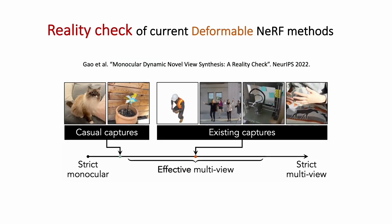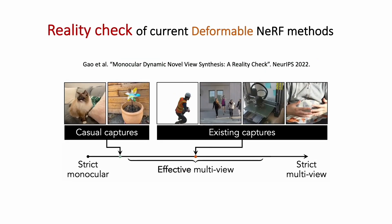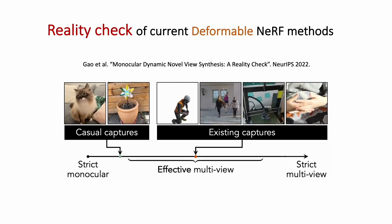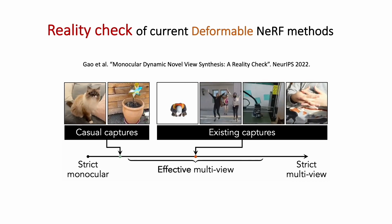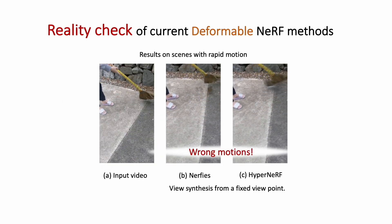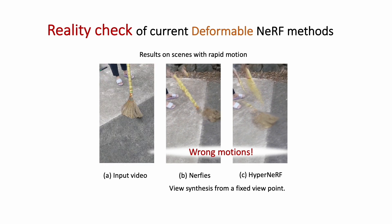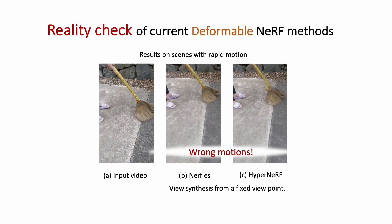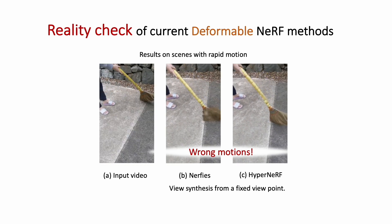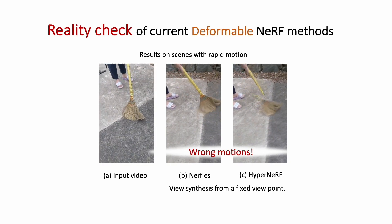Recent deformable NeRF approaches have achieved promising results, but based on observations, their current success is mainly due to test sequences being effectively multi-view, with faster camera motion compared to scene motion. Applying current state-of-the-art deformable NeRF approaches directly to videos with relatively rapid scene motion, such as waving a broom, does not yield plausible view synthesis results. These methods tend to make structural mistakes regarding the motion of the broom.